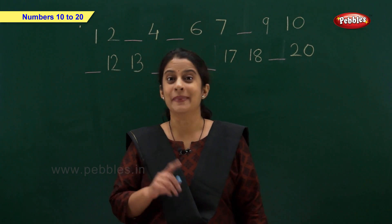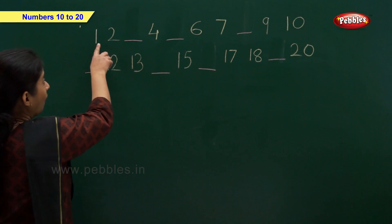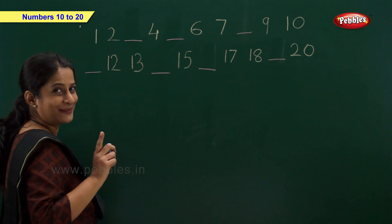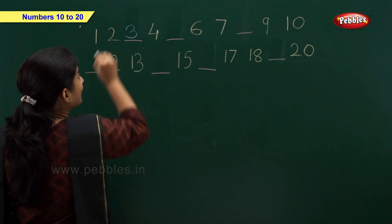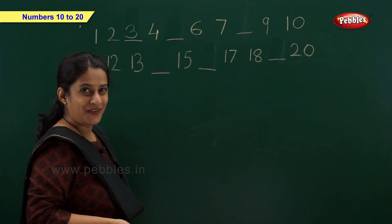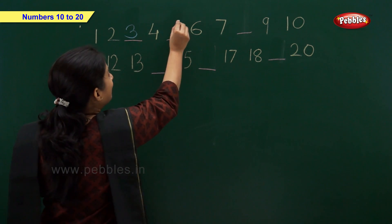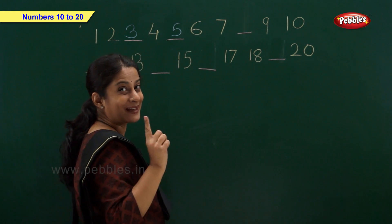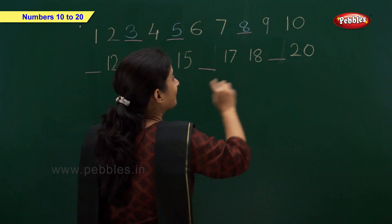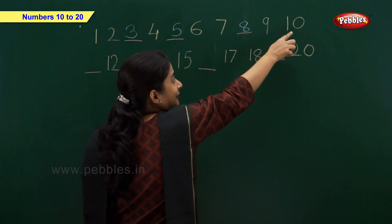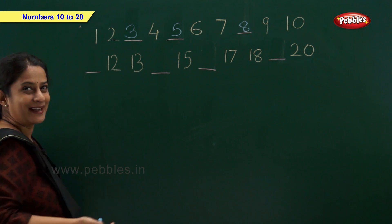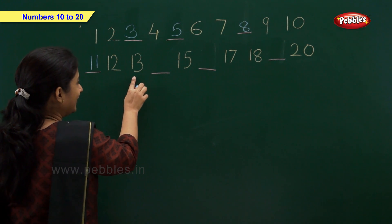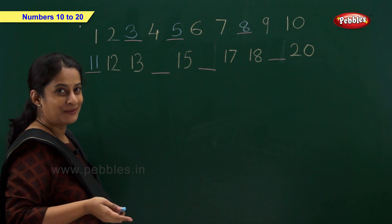Now let us write the missing numbers. 1, 2 — which number comes after 2? Right, 3! 4, and now 5, 6, 7, 8, 9, 10, and after 10 — 11, 12, 13, and now 14.